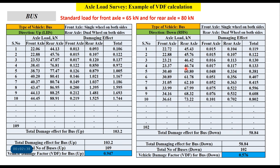Similarly, we conduct the survey in the down direction using the same procedure — taking the sample in both the up direction and down direction. Let us say we surveyed 102 buses in the down direction and the total damage effect is 58.84. So the vehicle damage factor for bus in the down direction will be 0.576.